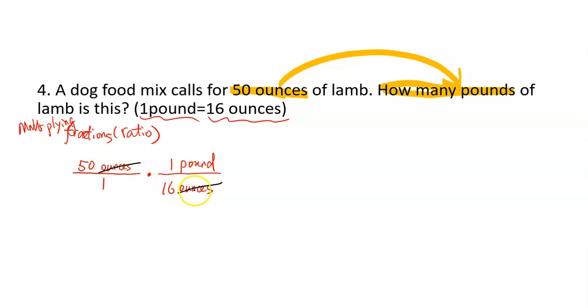So that's why I put 16 ounces in the bottom, because the bottom ounces can cancel the top ounces. That way, it will leave us the pound we need. So now we can multiply straight across, which is 50 times 1, that's 50 pounds.